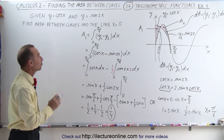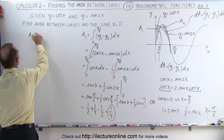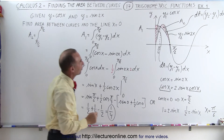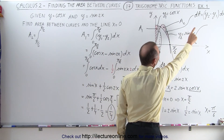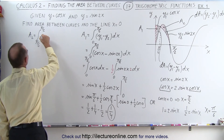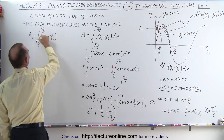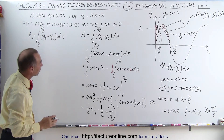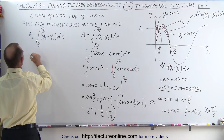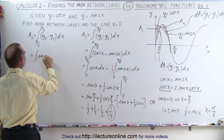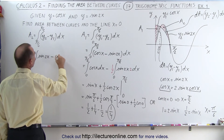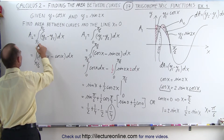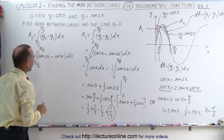Now we find area A2, equal to the integral from pi over 6 to pi over 2. In this case the area element dA is y2 minus y1 — it's reversed. So that's (y2 minus y1) dx. Plugging in, y2 is sine of 2x and y1 is cosine of x, giving the integral of (sine of 2x minus cosine of x) dx from pi over 6 to pi over 2.